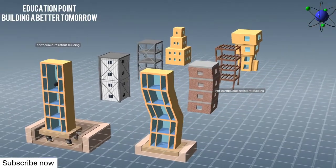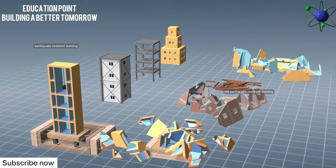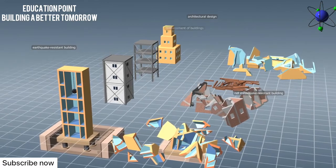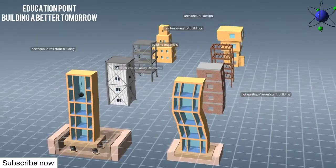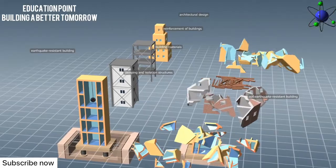Therefore, the best way to protect against earthquakes in seismic areas is to build earthquake-resistant buildings. The architectural design of buildings, their reinforcement, the building materials used, and seismic isolation and damping structures are all important in terms of seismic resistance.